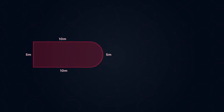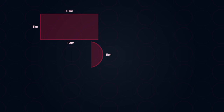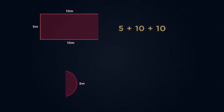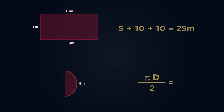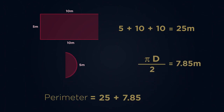Let's quickly have a look at where these numbers came from. Split the shape up into a rectangle and a semi-circle. For the rectangle, we only want these three sides. Then we only want the circumference of half the circle, hence divide by two. Add the perimeters together and we get 32.9 metres.